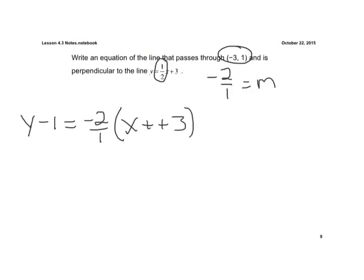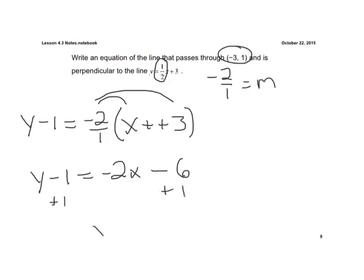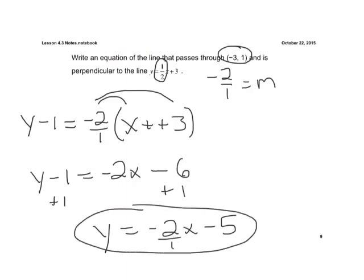We're going to get this into slope-intercept form, so we need to distribute. We have y minus 1 equals negative 2x. With a negative times a positive, we get minus 6. Adding 1 to both sides gives us y equals negative 2x minus 5. Whether you write negative 2 or negative 2 over 1, they're the exact same — that's our negative reciprocal slope.